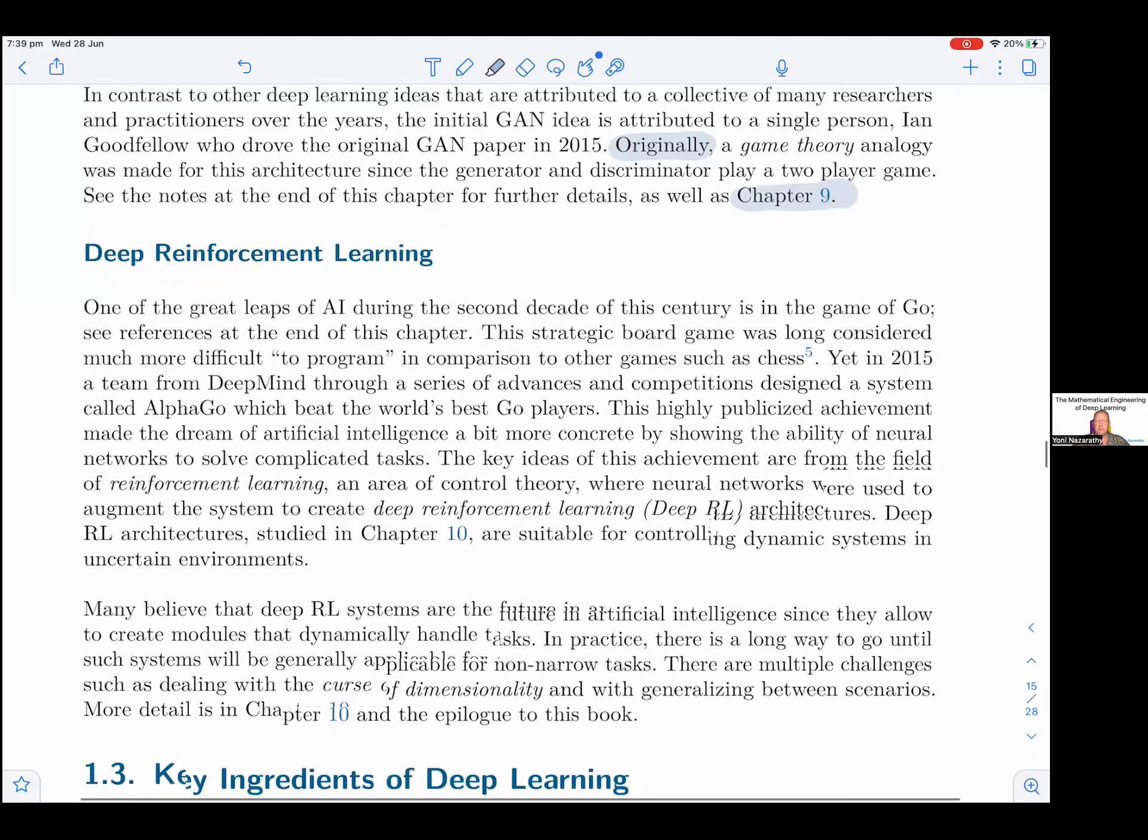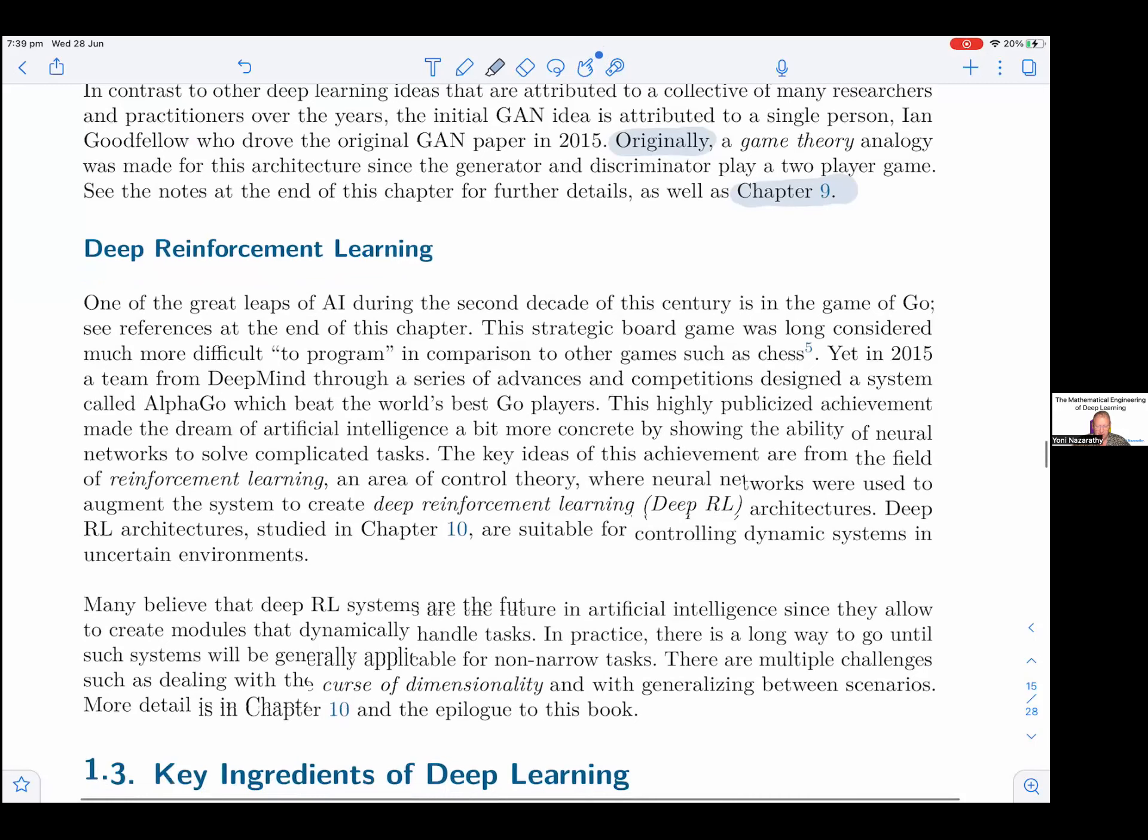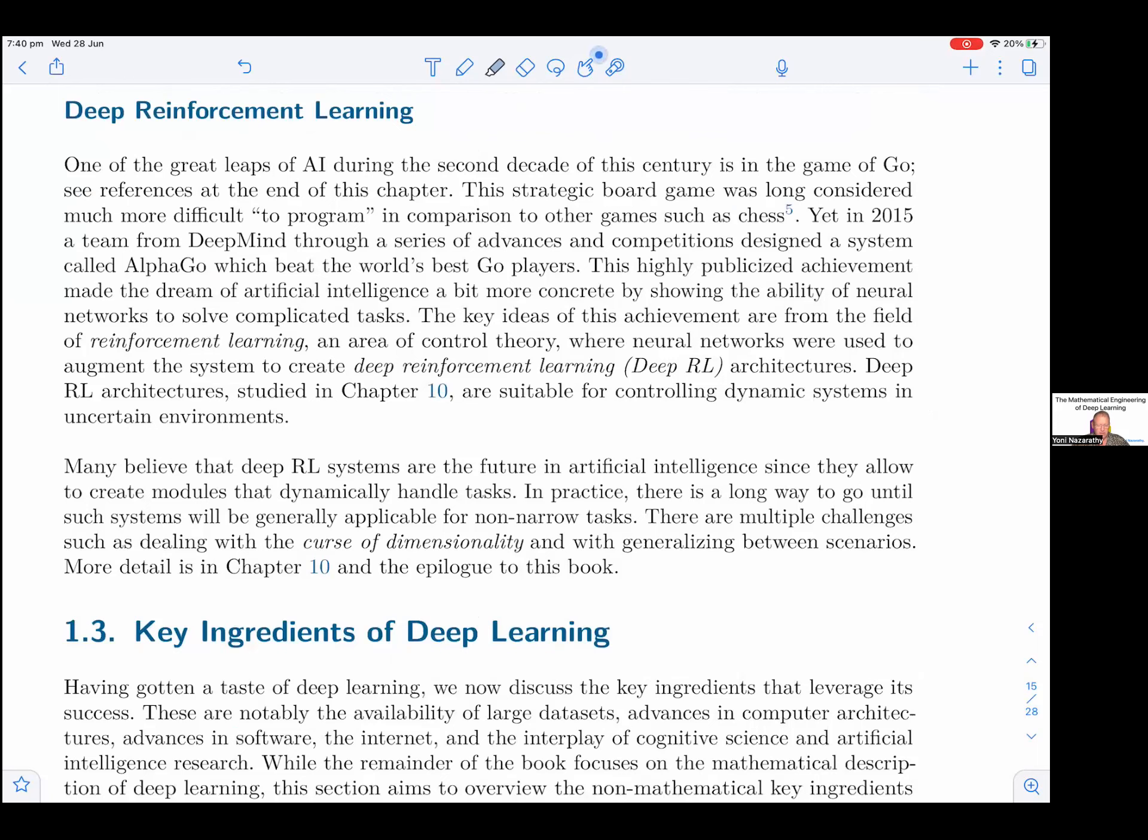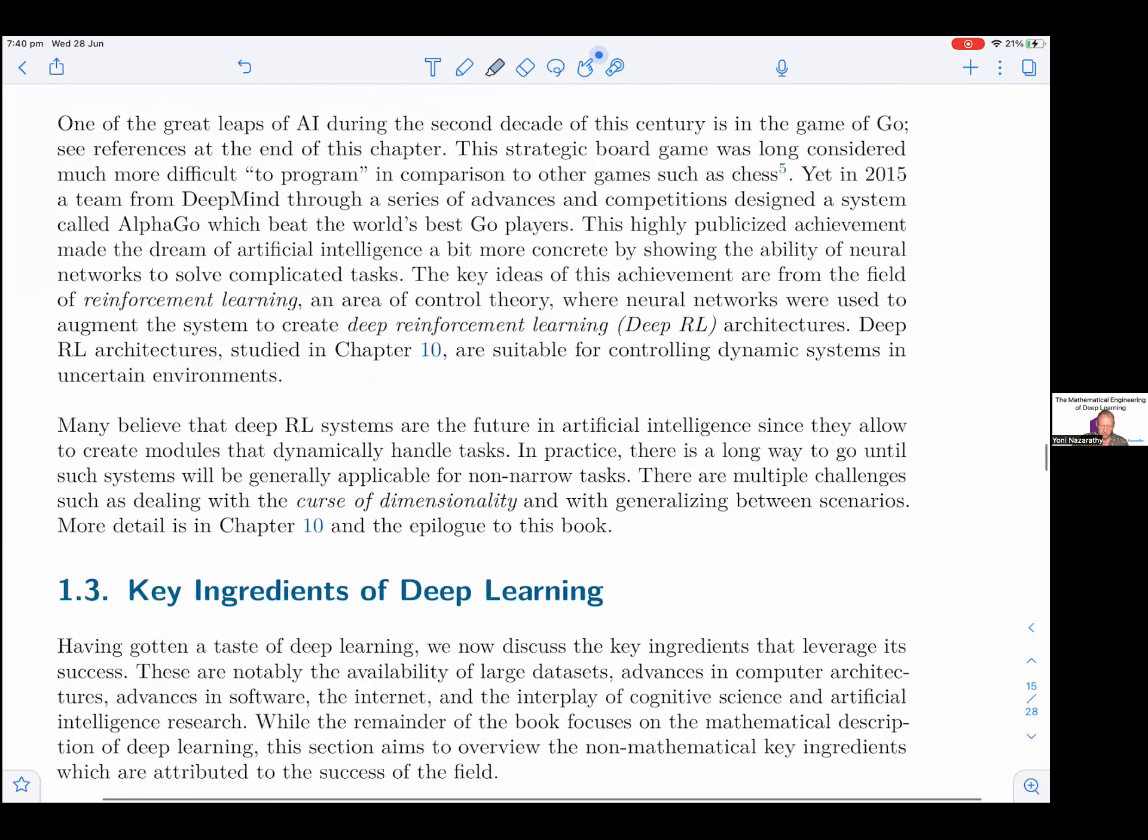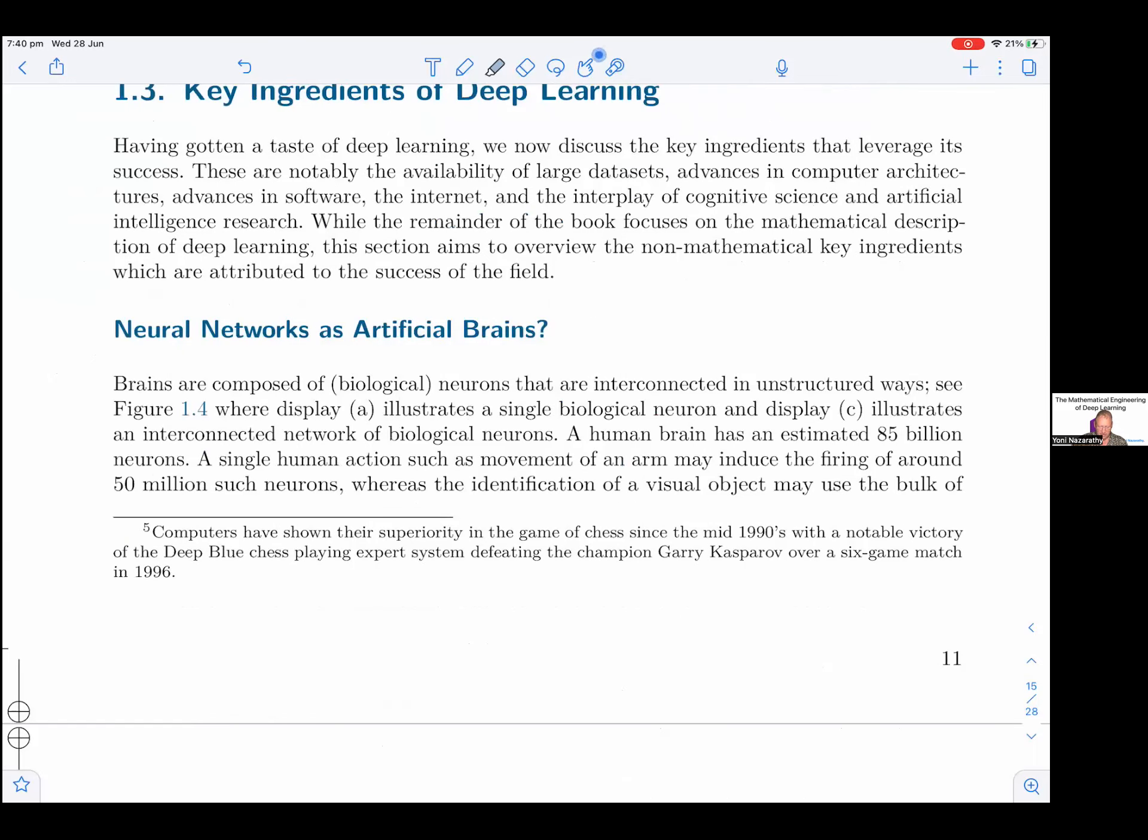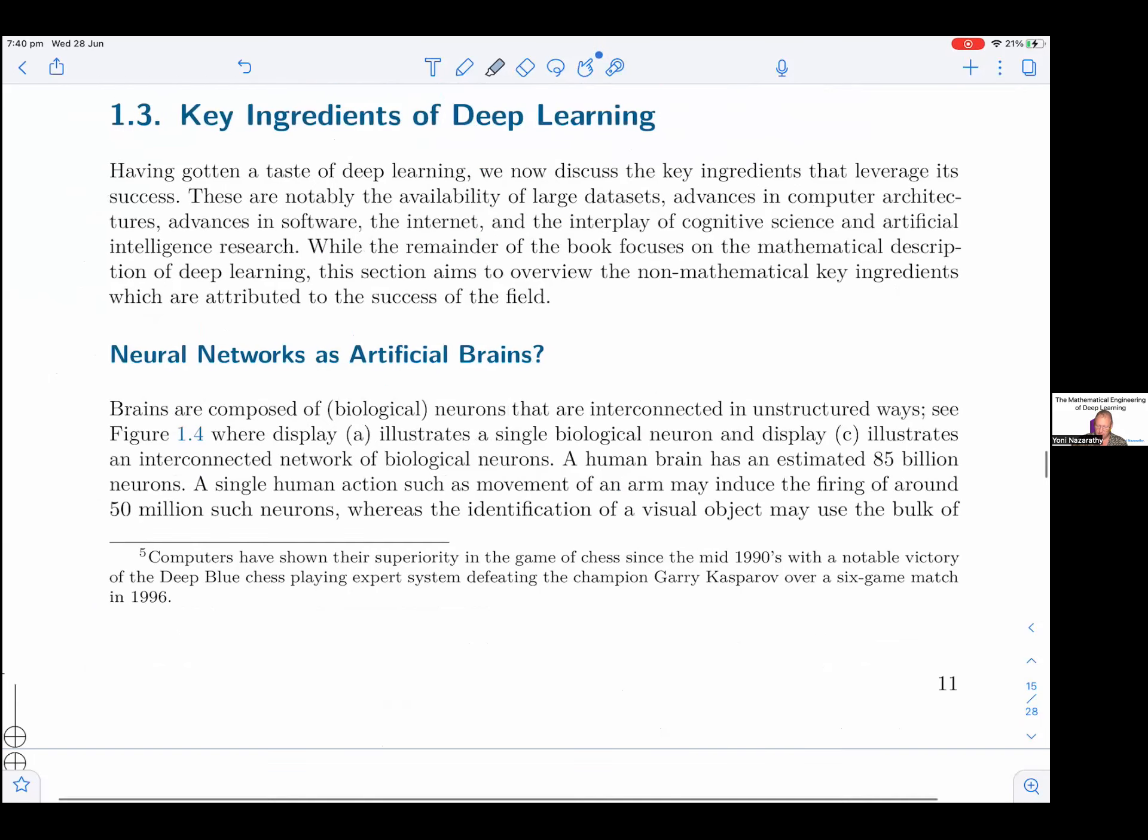Deep reinforcement learning. One of the great leaps of AI during the second decade of this century is in the game of Go. See references at the end of the chapter. This strategic board game was long considered much more difficult to program in comparison to other games, such as chess. Here's a footnote: Computers have shown their superiority in the game of chess since the mid-1990s, with the notable victory of the deep blue chess playing expert system defeating the champion Garry Kasparov over a six-game match in 1996. So that's about chess, but we're here about Go.